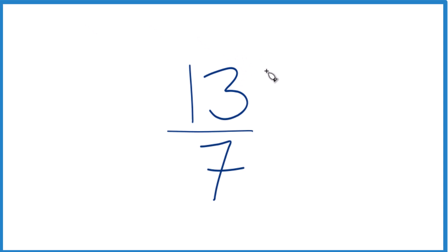So let's simplify the fraction 13 sevenths, and then we'll write it as a mixed number. In terms of simplifying 13 sevenths, it's already simplified. The only number that goes into 13 and 7 evenly is 1, so this is already simplified and we can't really do much more there.